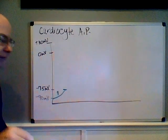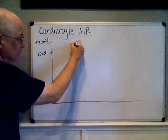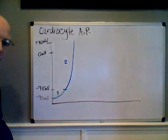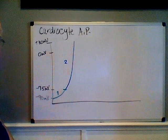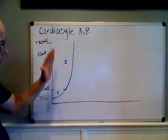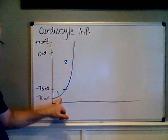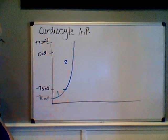That leads to the rapid depolarization stage, where we rapidly rush to threshold. This is all due to voltage-gated sodium channels allowing sodium ions to enter the cell. The only difference from the neuron action potential at this point is that we don't need a neurotransmitter or stimulus here — it's going to naturally leak sodium through.